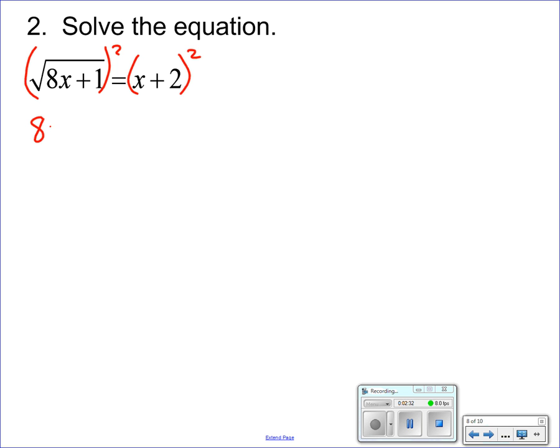So on the left, 8x + 1, because the squared undoes the radical. Now remember when you're squaring something, remember this formula: (a+b)² = a² + 2ab + b². So therefore, first term squared, the product of 2 and x, that's 2x times 2, so that's 4x plus 4.